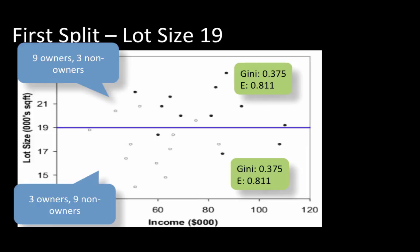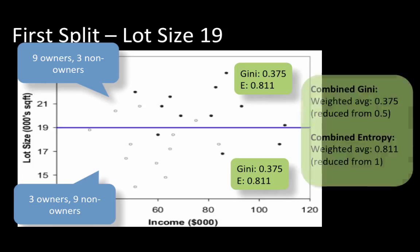We can condense the two regions into a single impurity measure by taking a weighted average. Since both regions have 12 cases each, the weighted average Gini index is 0.375 and the weighted average entropy is 0.811. This partitioning has improved the overall Gini from 0.5 to 0.375, and the overall entropy from 1 to 0.811.